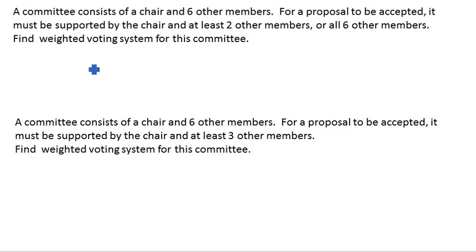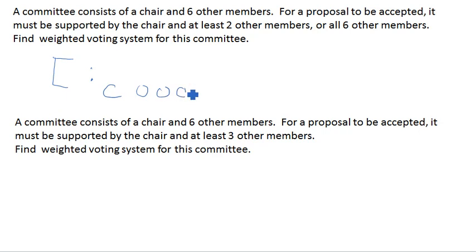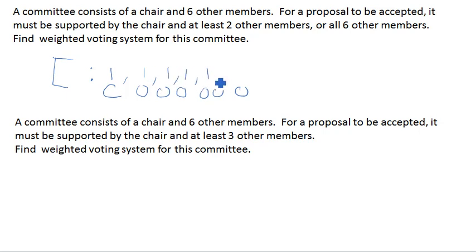If everyone had equal weight and we didn't have these conditions, we could create a weighted voting system where our chair and six other members each had one vote. That would be our voting system.